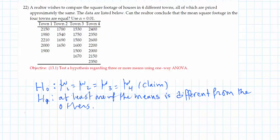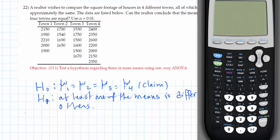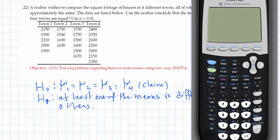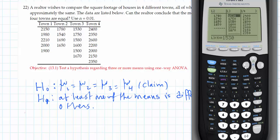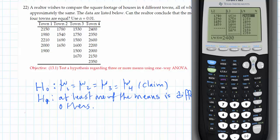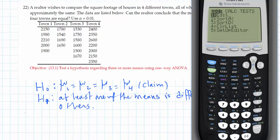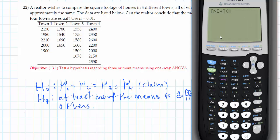Now we're going to the calculator. Turn it on, go to STAT, then EDIT, and enter the data from the four lists — town one, town two, town three, and town four. I've done that already to save time. Now quit and go to STAT, then TESTS, scroll up and select ANOVA.